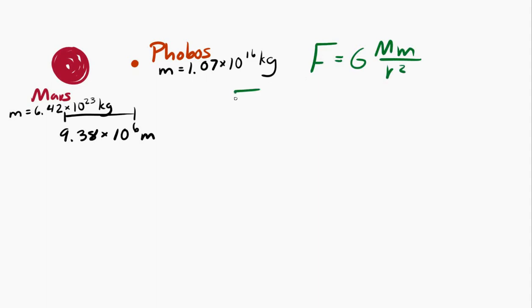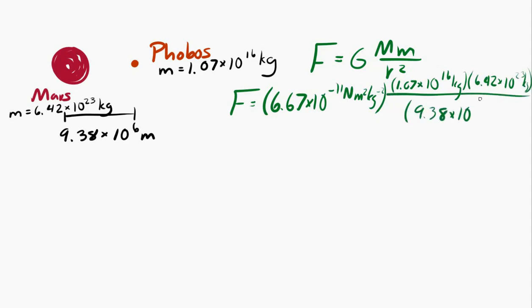Using that information, we can determine the gravitational force on Phobos. We've got to put it into the equation. There's a lot of numbers. There's a lot of exponents. But if you're careful, you can calculate the gravitational force. And it's 5.21 times 10 to the 15 newtons. Remember, it's always an attractive force. So that force on Phobos is toward Mars.